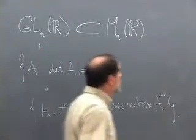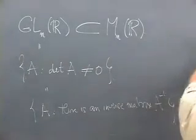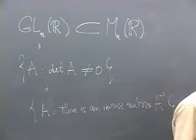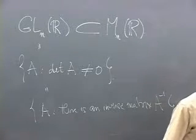So for one by one matrices, the set is everything but the 0 matrix. But for 2 by 2 matrices, you have to throw away other matrices.